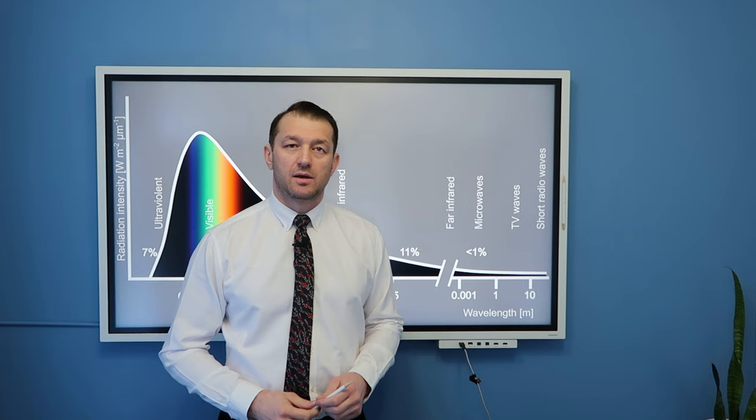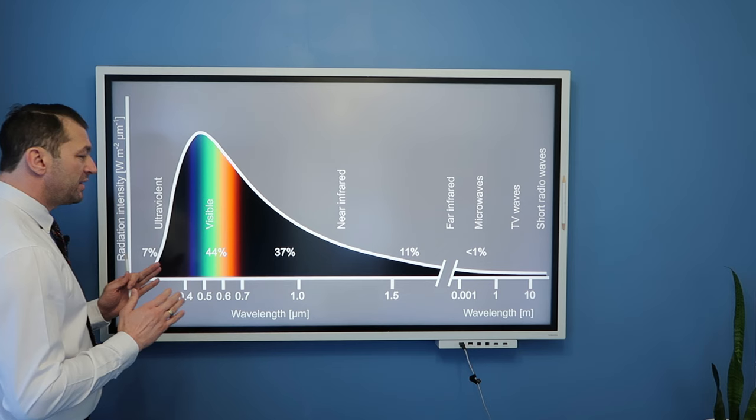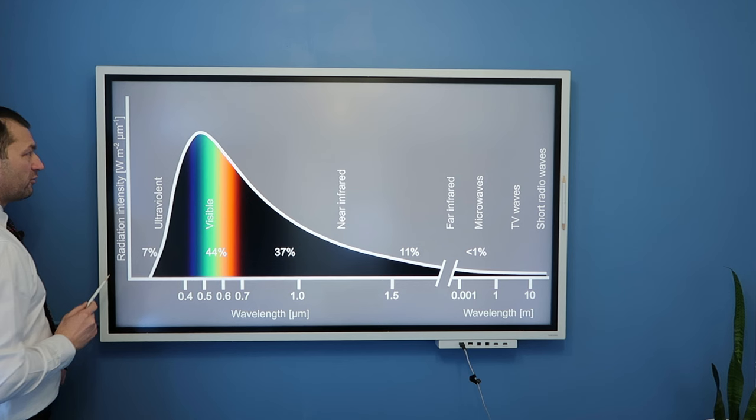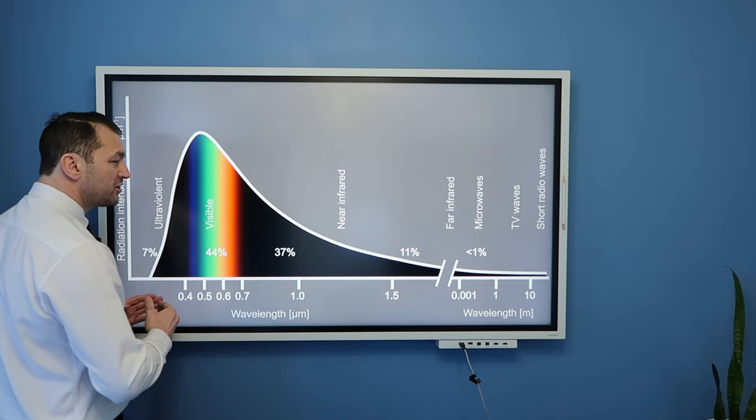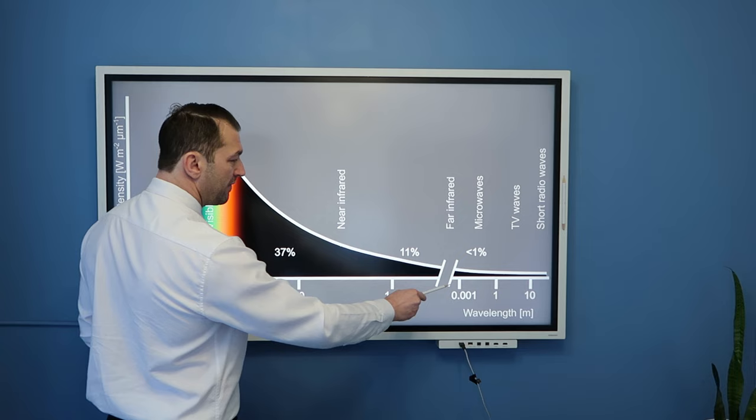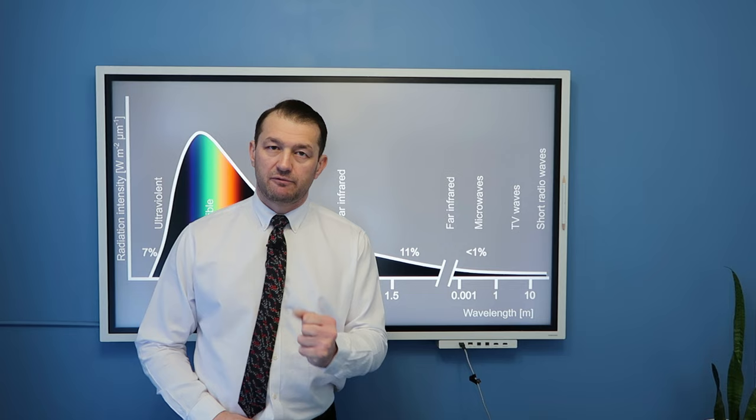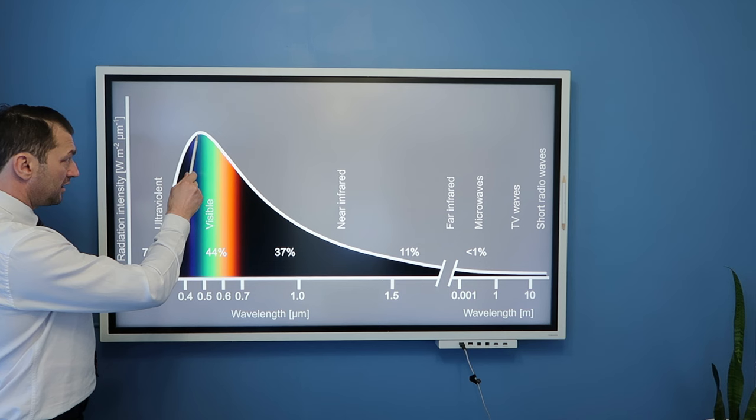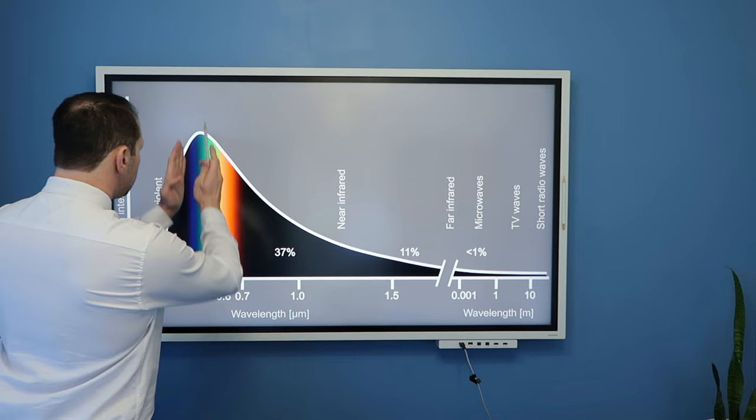Here is a slide that shows electromagnetic spectrum of the Sun. Spectrum means distribution of energies for different wavelengths. So consequently, y-axis is radiation intensity or energy in watts per square meter per micrometers and the x-axis is wavelength in micrometers but because there are so many different wavelengths I had to cut x-axis here and the rest here is in meters.